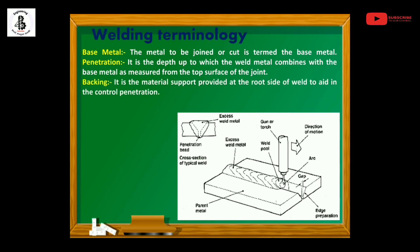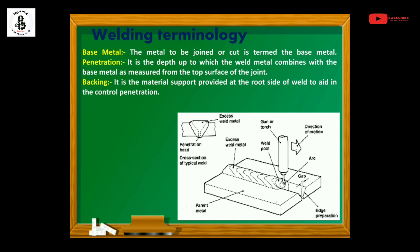After penetration, the next term is backing. During the welding process, backing is provided or used to support the root side of the weld metal, to control penetration. It acts as a backup or supporting system for the molten form of the metals.